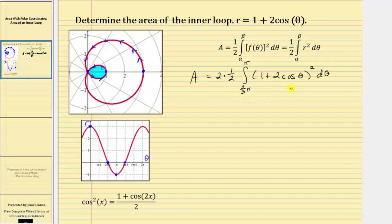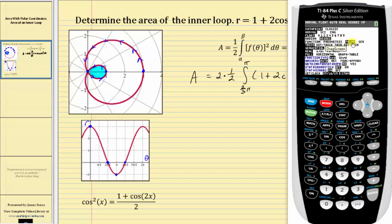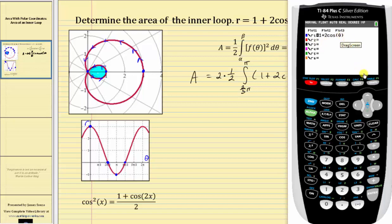Before we evaluate this, let's check the limits of integration in degrees on the TI-84. If we press mode, notice how I'm in degree mode and polar mode. If we press window, theta goes from zero to 360 degrees by increments of 2.5 degrees, and I'm going to use this window here. If we press y equals, I've already entered the polar equation, and now we press graph.